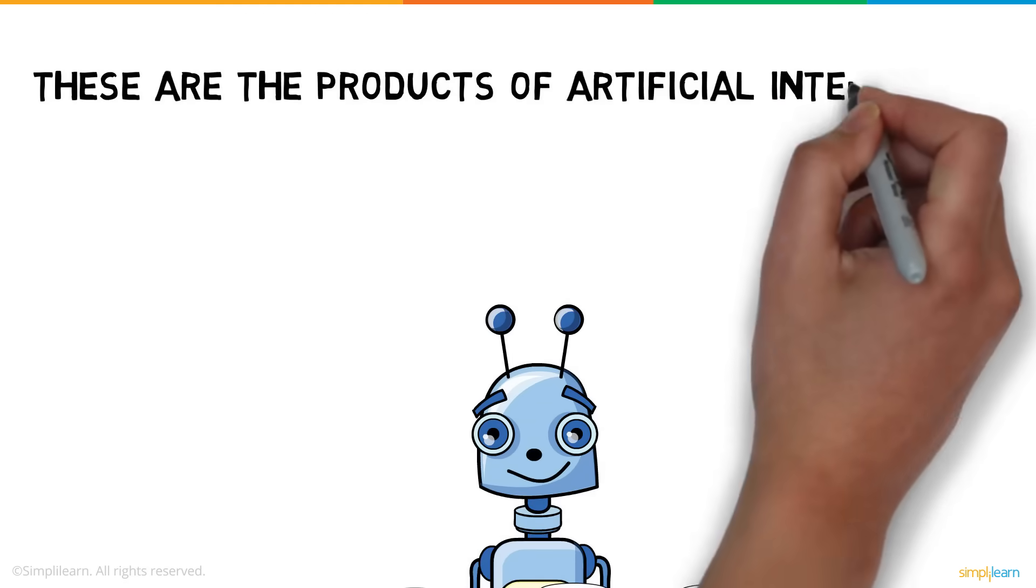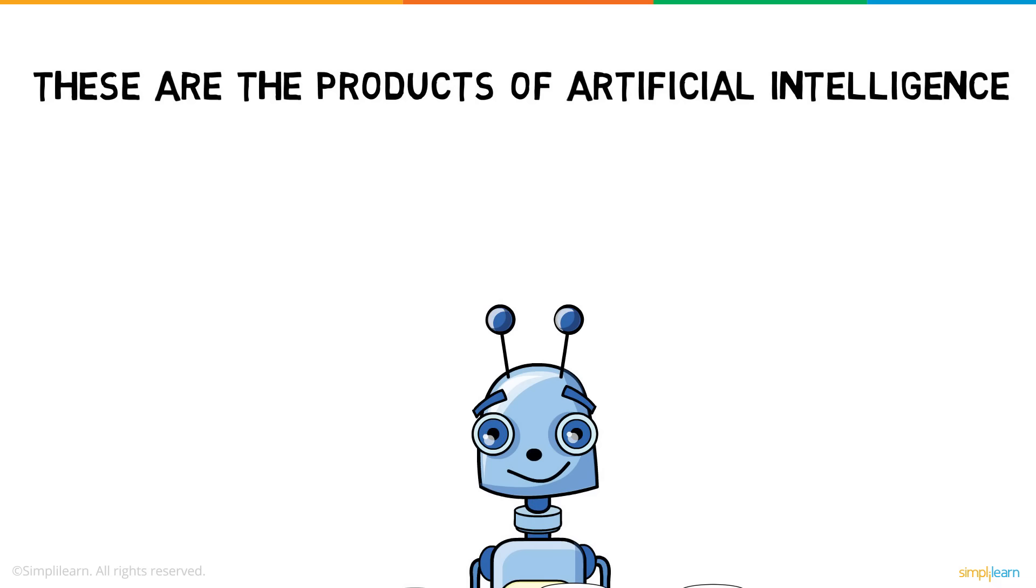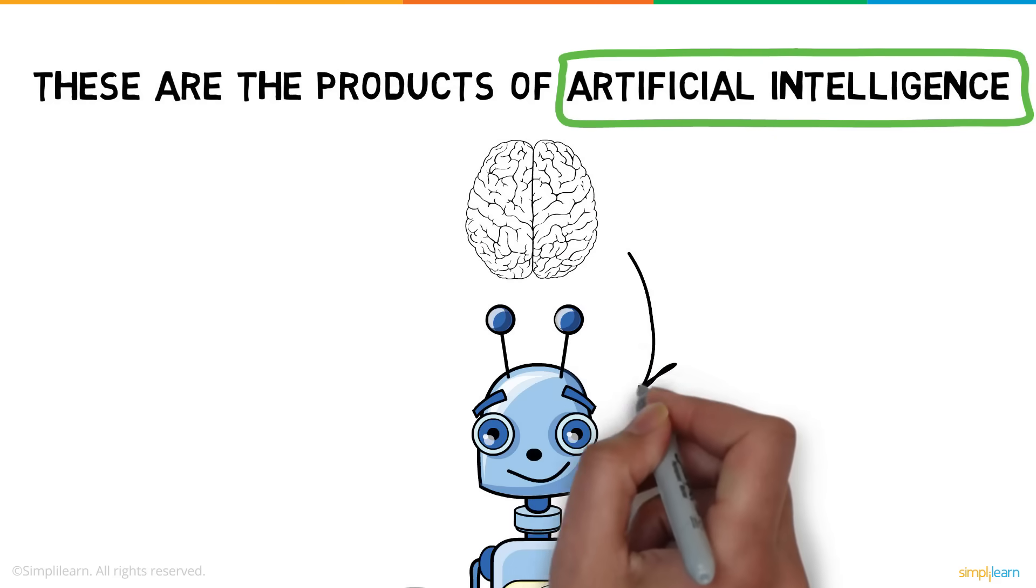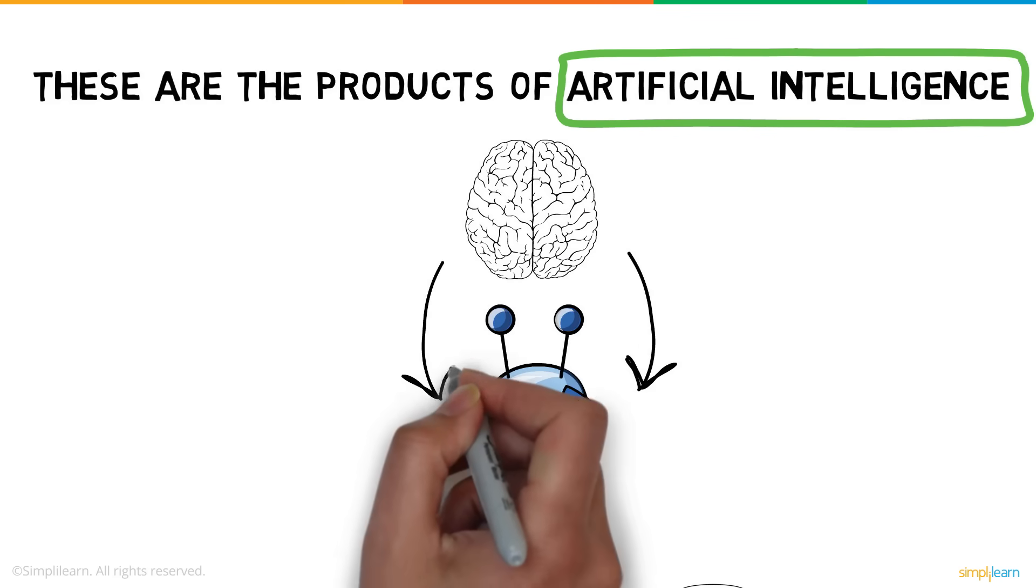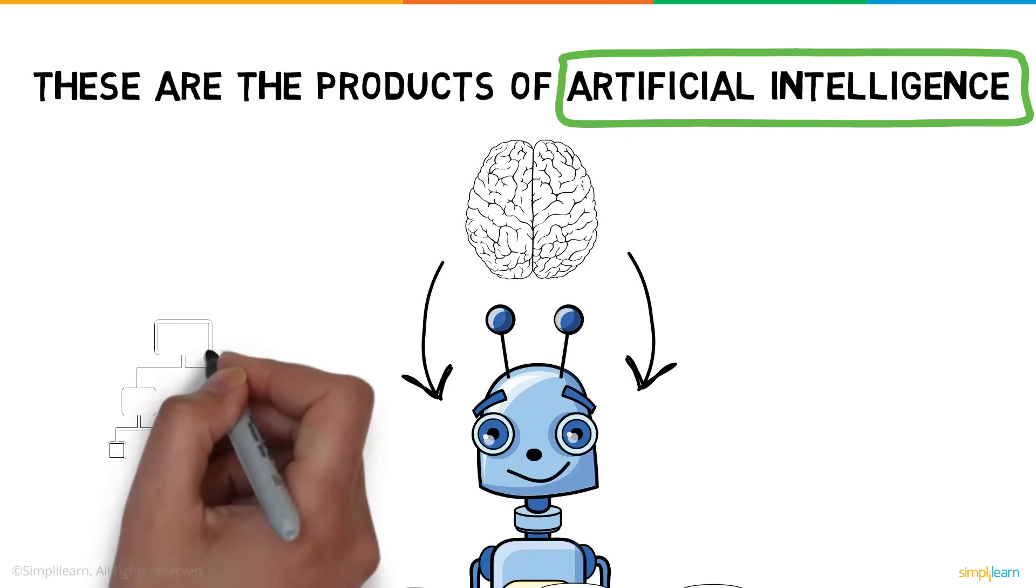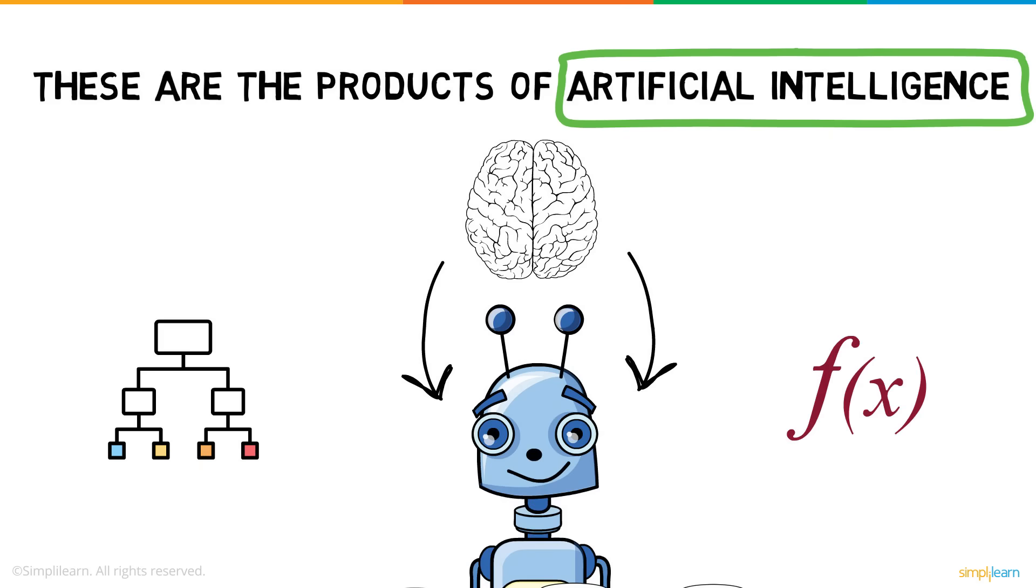These are the products of artificial intelligence. But why use the term artificial intelligence? Well, these machines are artificially incorporated with human-like intelligence to perform tasks as we do. This intelligence is built using complex algorithms and mathematical functions.